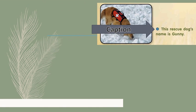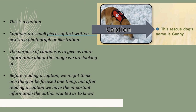Caption: this is a caption. Captions are small pieces of text written next to a photograph or illustration. The purpose of captions is to give us more information about the image we're looking at. Before reading a caption we might think one thing, but after reading a caption we have the important information the author wanted us to know.